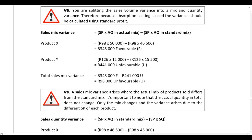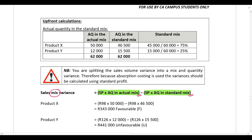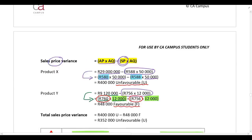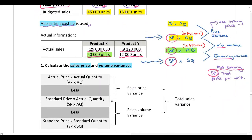For the mix variance: standard profit per unit multiplied by actual quantity in the actual mix, compared to standard profit per unit multiplied by actual quantity in the standard mix. The actual quantity in the actual mix is: 50,000 units of Product X and 12,000 units of Product Y — 62,000 units in total.